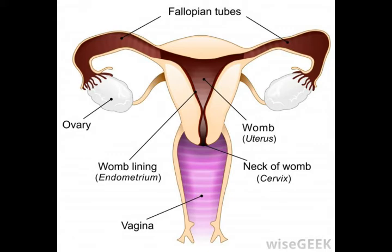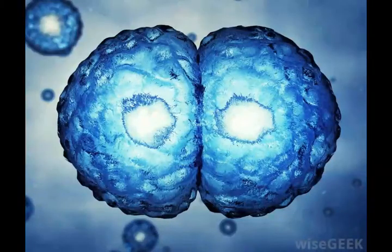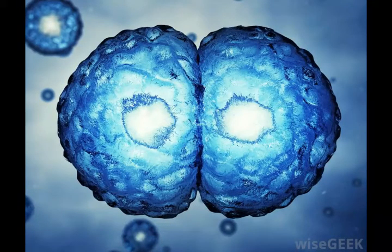During the first stage of development, the fertilized egg, or zygote, divides quickly in a process called cleavage. The first divisions of the zygote create the morula, which is a solid ball of cells. Then the blastula forms when the dividing cells, or blastomeres, create a layer called the blastoderm surrounding the central cavity, or blastocoel.